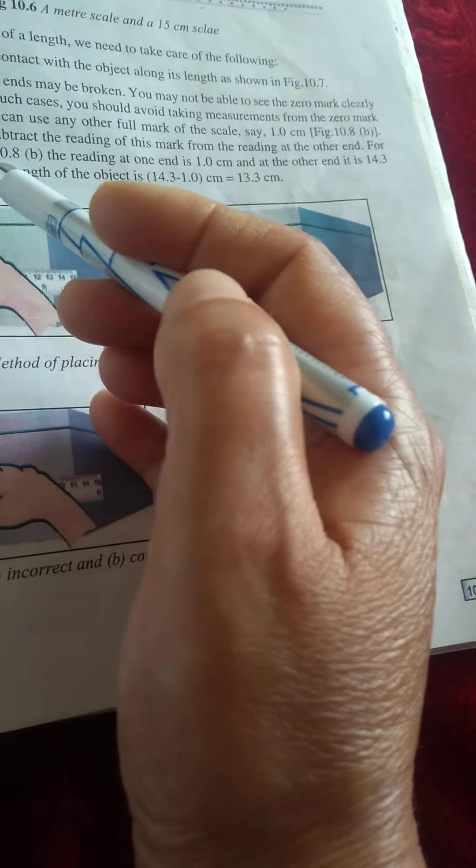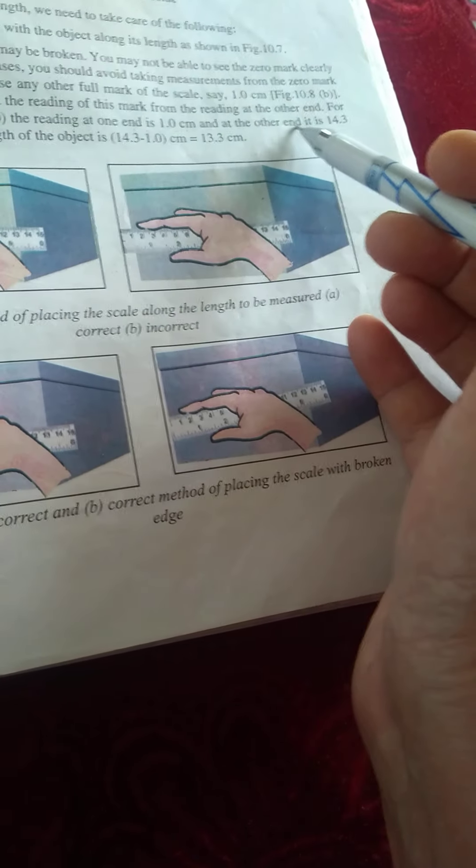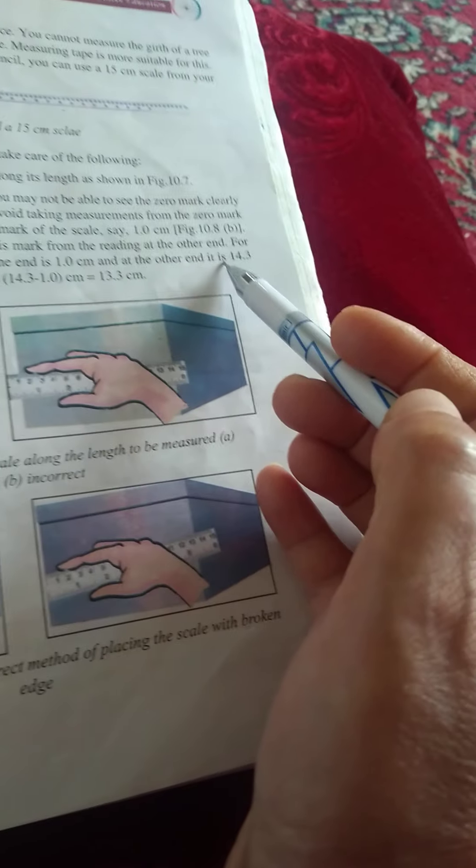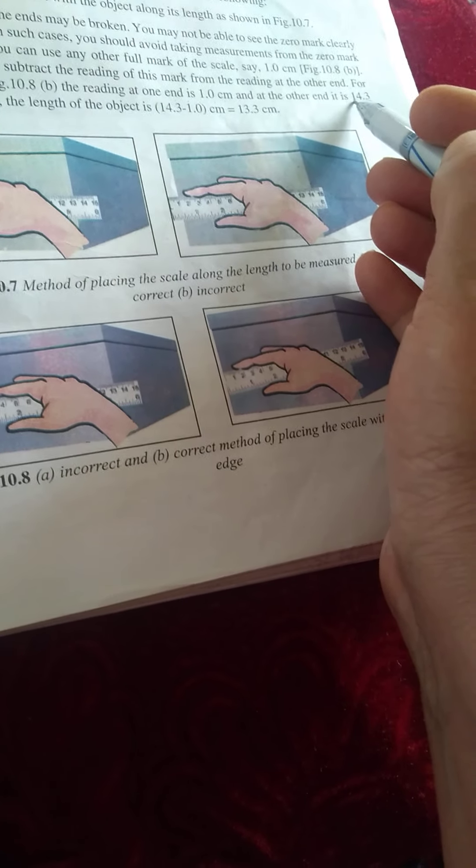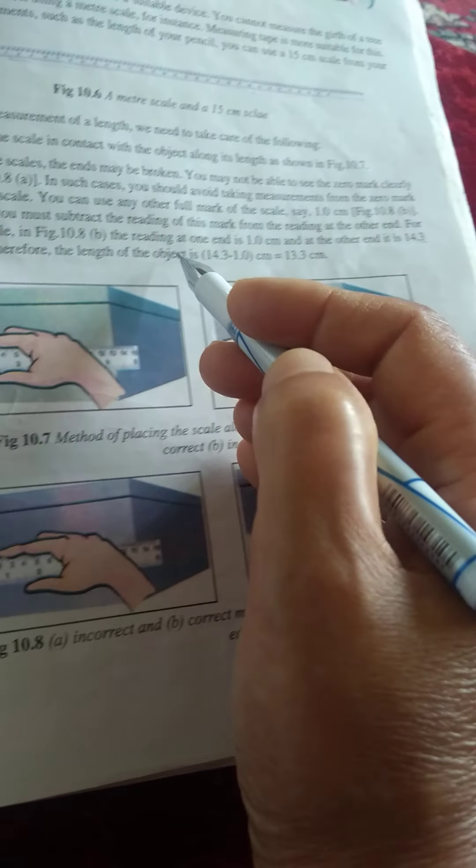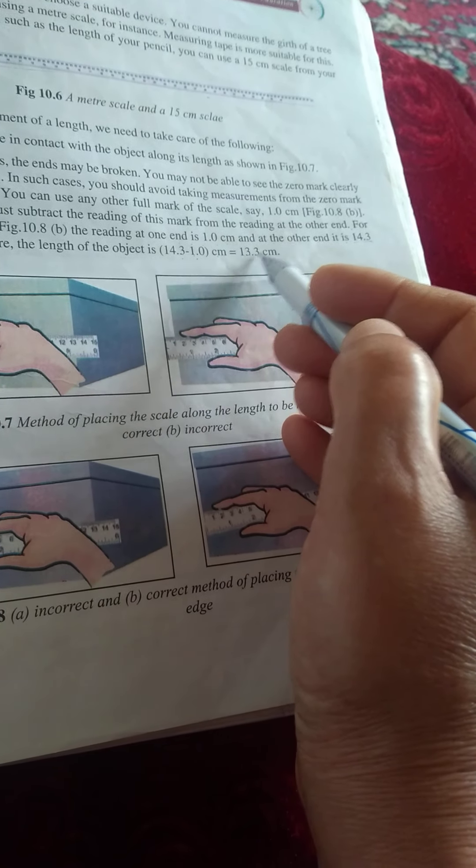For example, in figure 10.8b, the reading at one end is 1.0 cm and the other end is 14.3 cm.